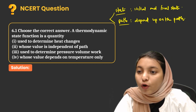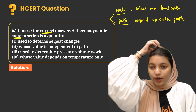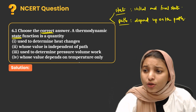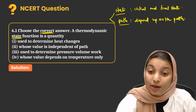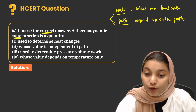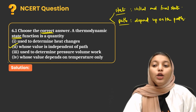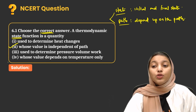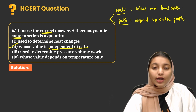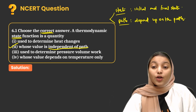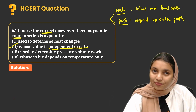They have asked for the correct answer about state function. The options include: used to determine heat change, whose value is independent of path, whose thermodynamic pressure-volume work, and whose value depends on temperature. The correct statement must be option 2 — whose value is independent of path — since state functions are independent of path whereas path functions depend upon the path.